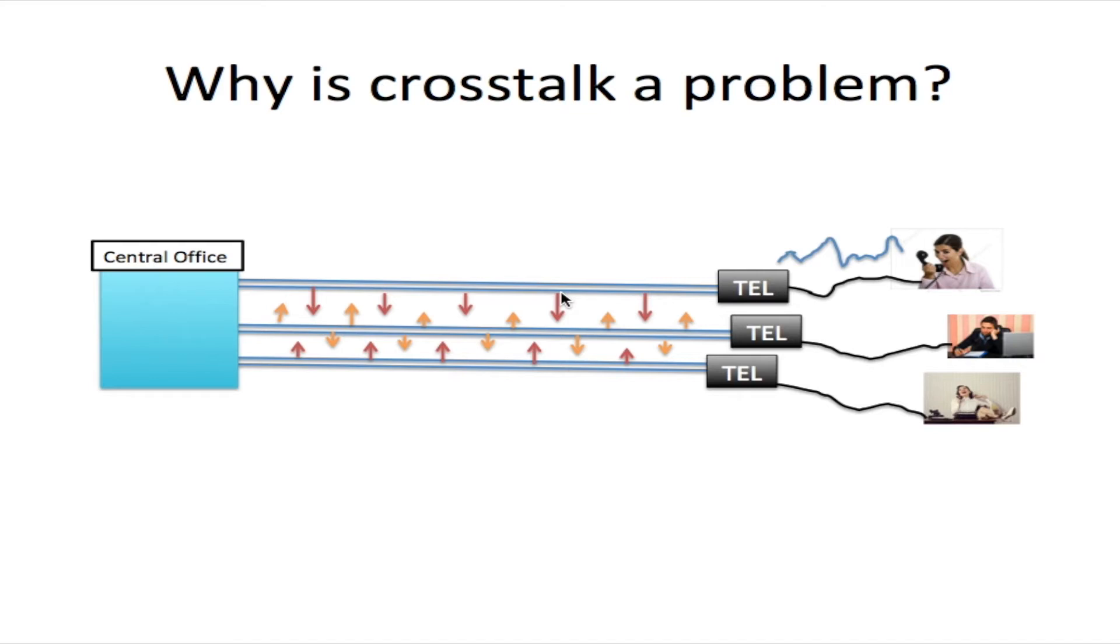The reason this crosstalk happens is that this electromagnetic field, indicated by the arrows here from line one, is generated into line two. This electromagnetic field causes noise, and this noise is in the form of a voice, this person's voice. The louder they speak, the louder it will get. That is why we refer to it as crosstalk.